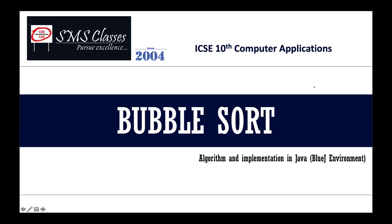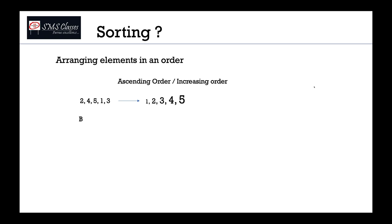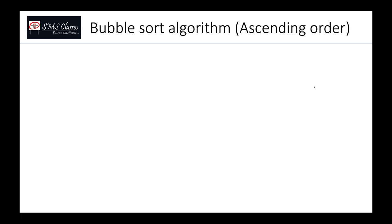Welcome to SMS classes. In this video I'm going to explain bubble sort algorithm and how to implement it as a Java program. Sorting means arranging elements in an order. Ascending order means arranging them from small to big; in case of strings it is alphabetical. Descending order means arranging them from big to small.